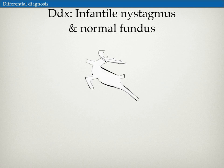When I created this mnemonic for infantile nystagmus and a normal retinal exam, I tried to create a symbol that would reflect back on what the differential is about, which is in this case nystagmus. So I chose a white stag to represent nystagmus.